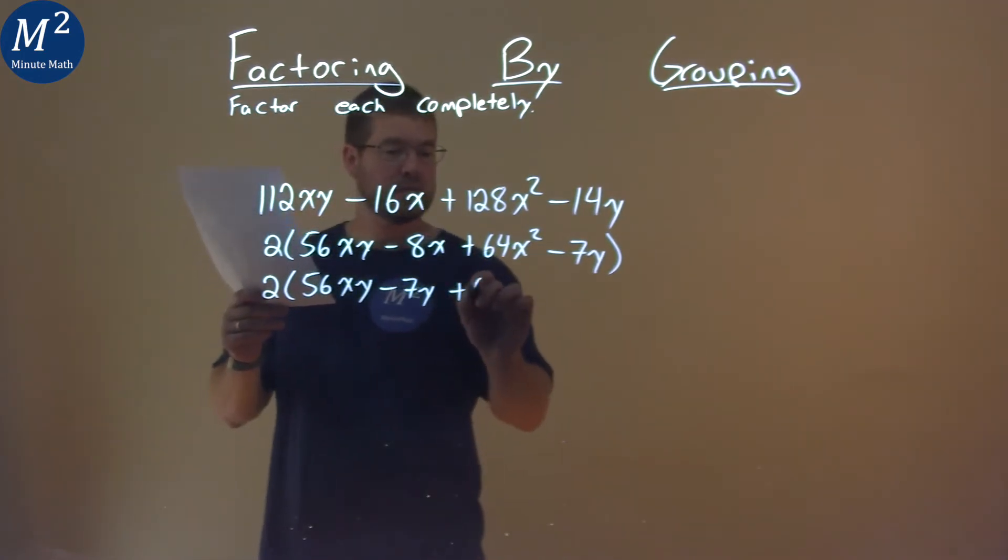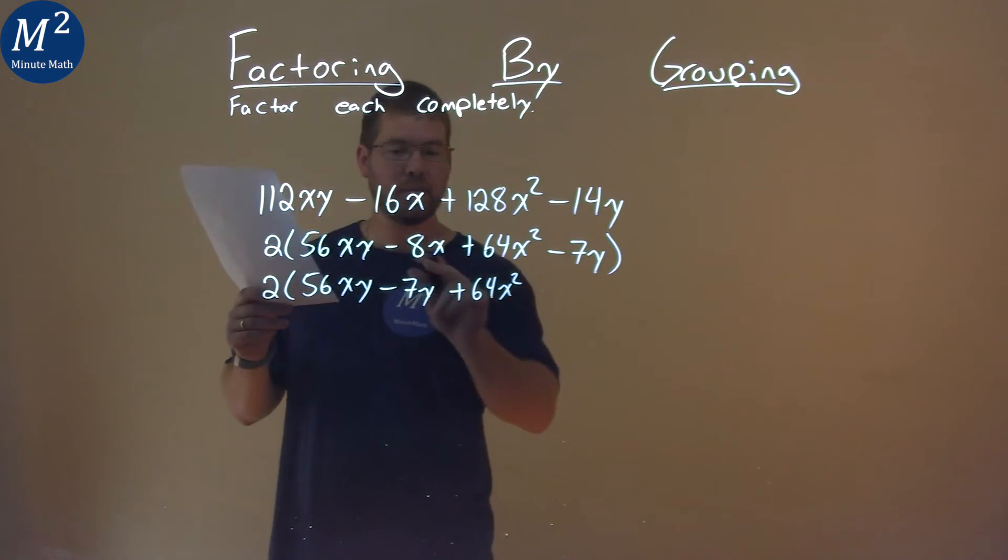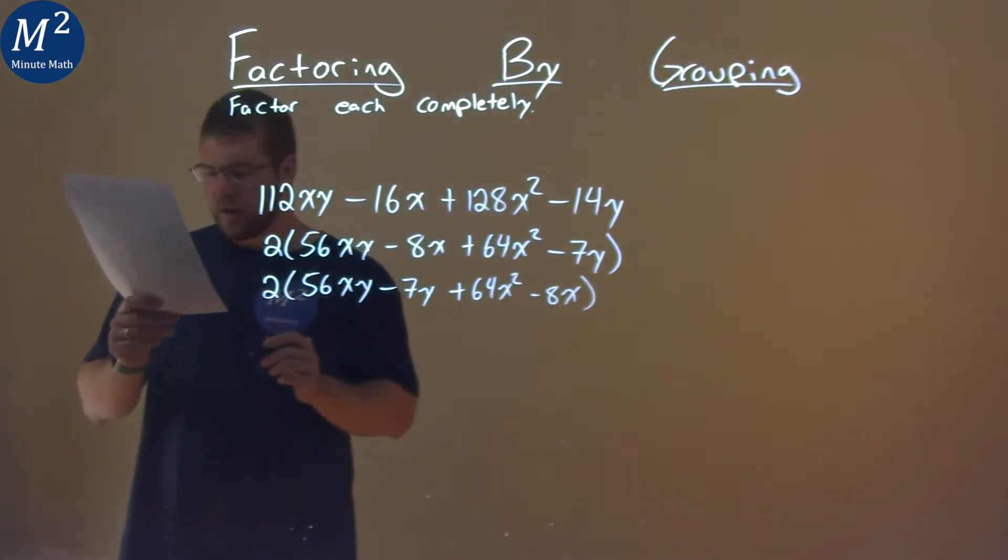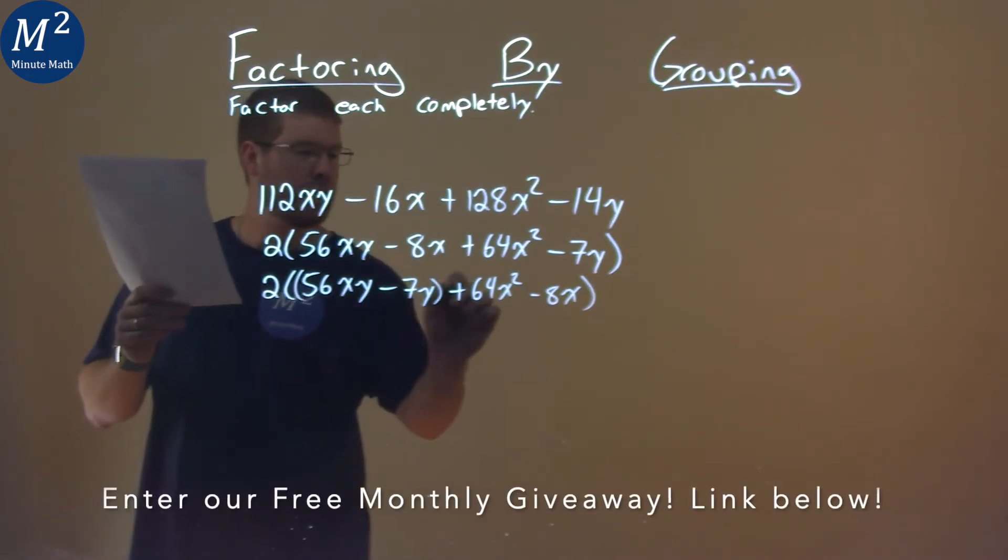Then, I'm going to put the positive 64x squared here, and then the minus 8x. I now can group the first two terms together and the second two parts.